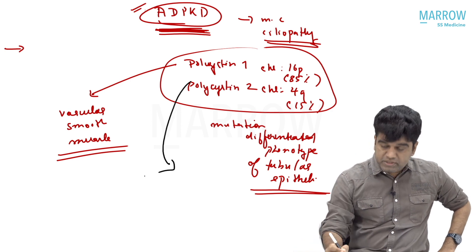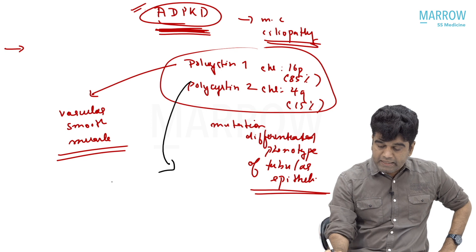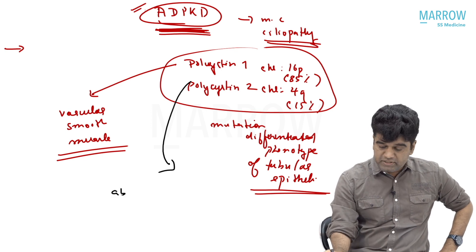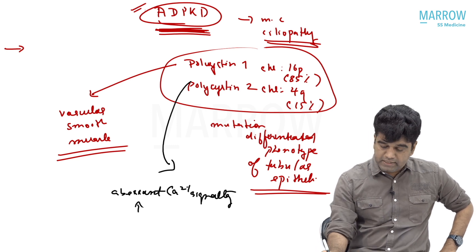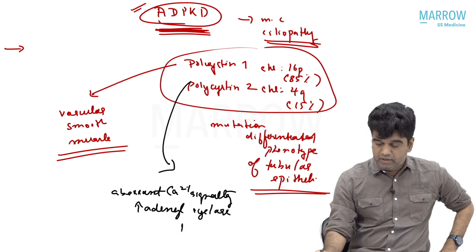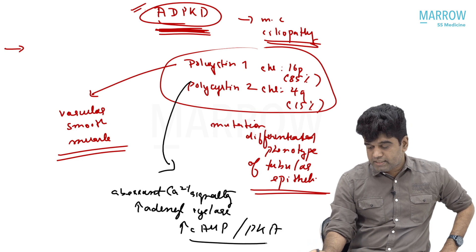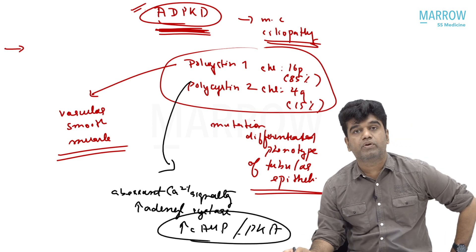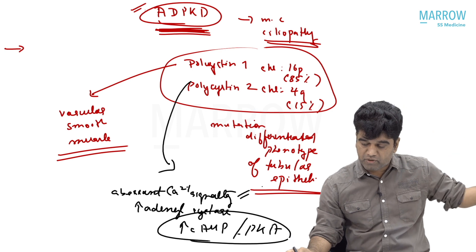If you have a mutation in polycystin, that leads to a few changes. First is aberrant calcium signaling. Second, there is an increase in adenyl cyclase, an increase in cyclic AMP, and protein kinase A. So — aberrant calcium signaling, increase in adenyl cyclase, increase in cyclic AMP, protein kinase A. These are the words that you have to know.